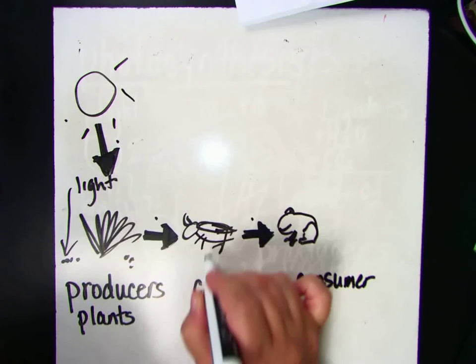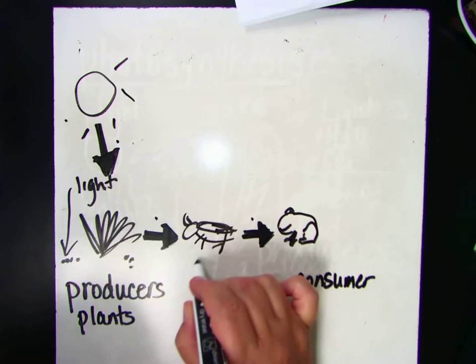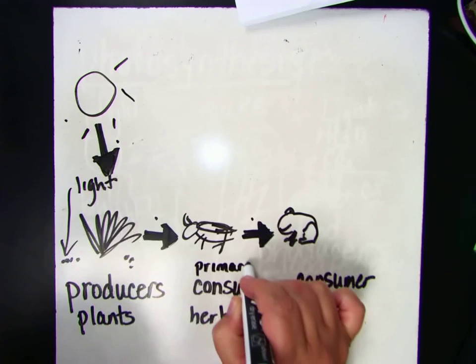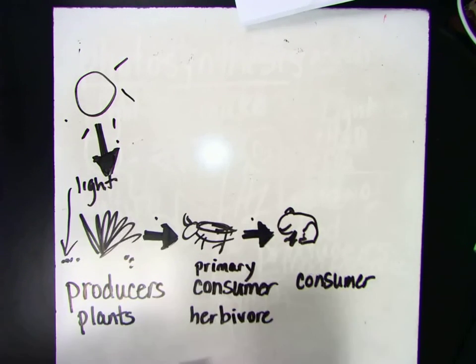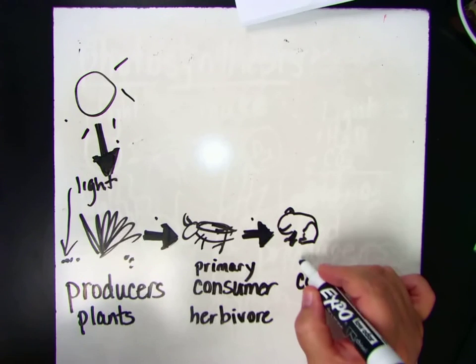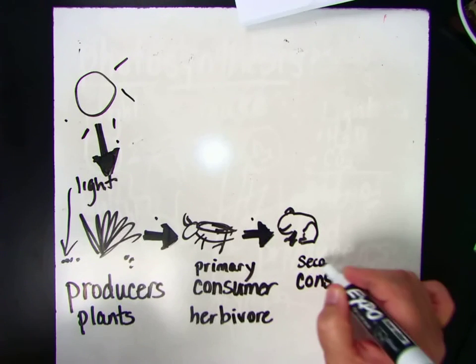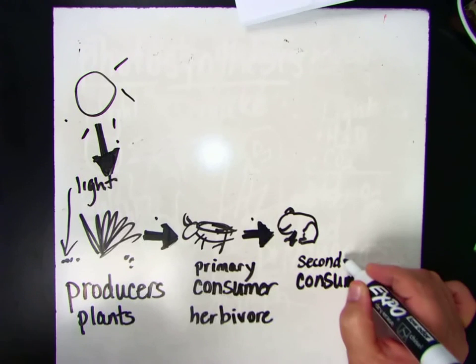So this guy eats a producer, so he's called a primary consumer because he's the first guy, the first consumer. And primary means first. And this guy is a secondary consumer because he's the next guy or the second guy.